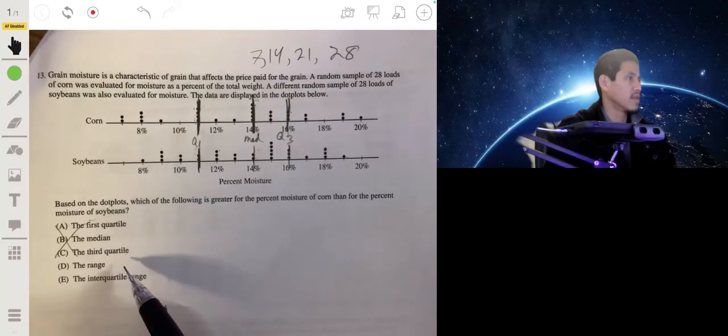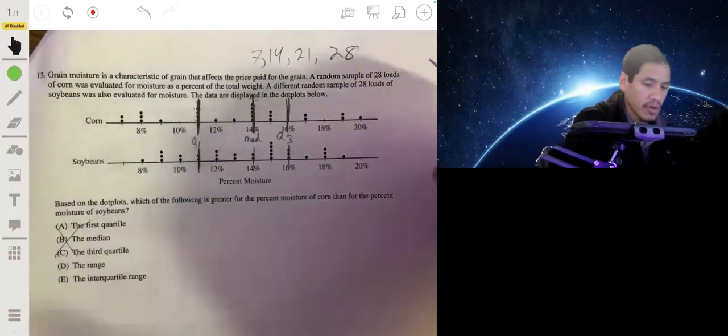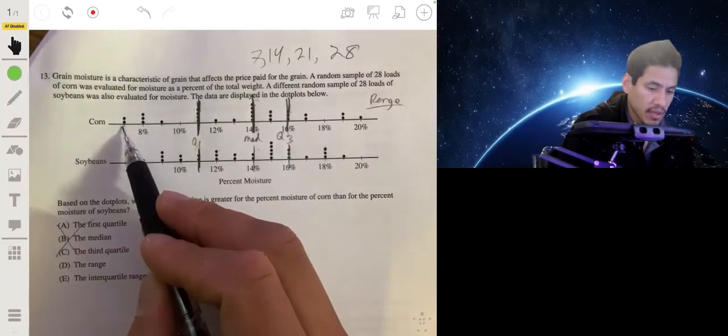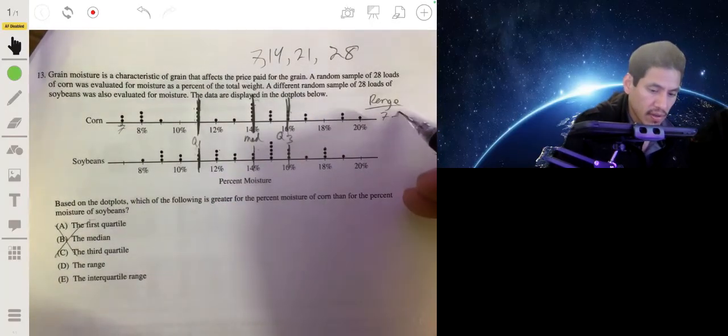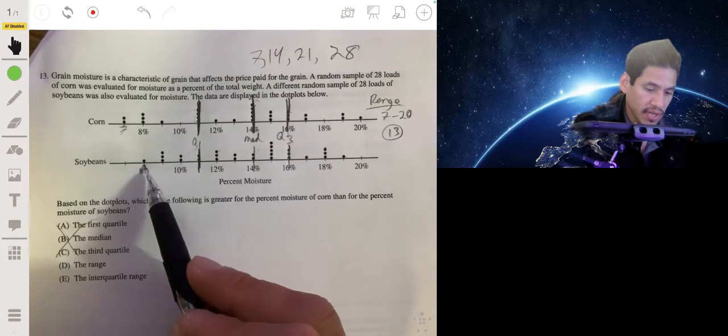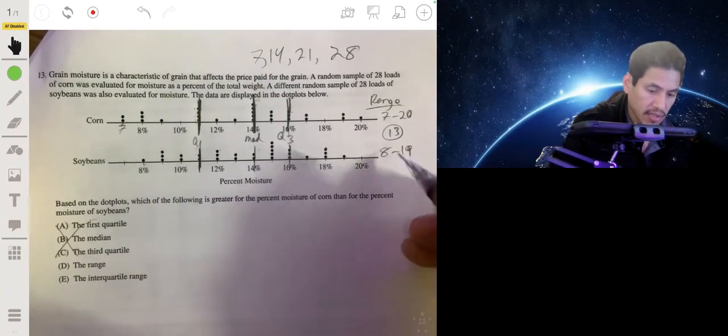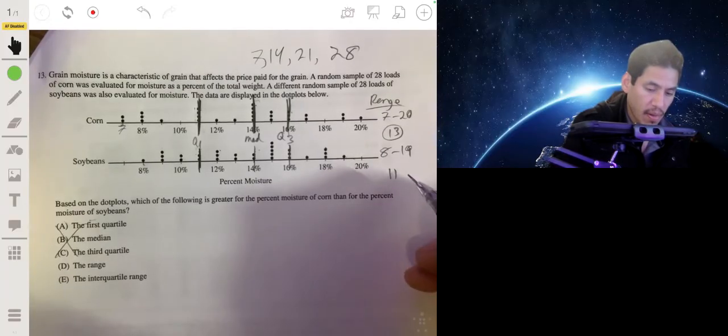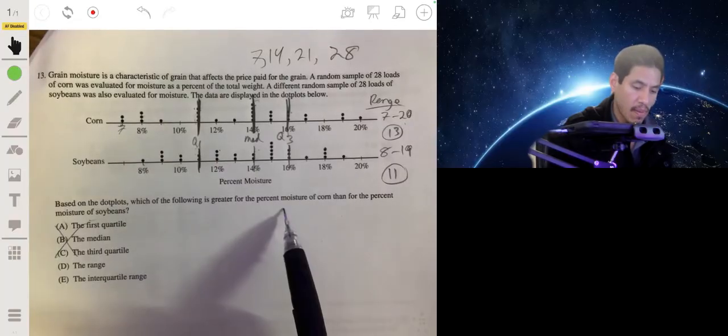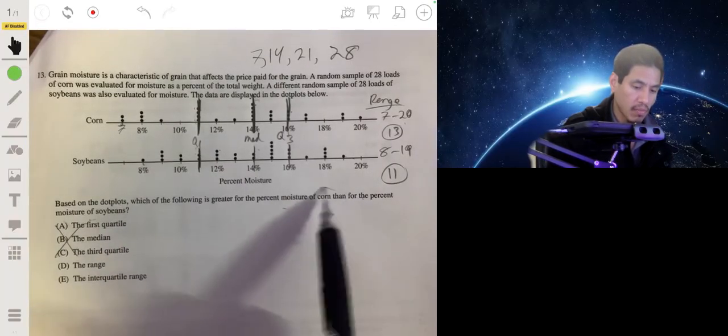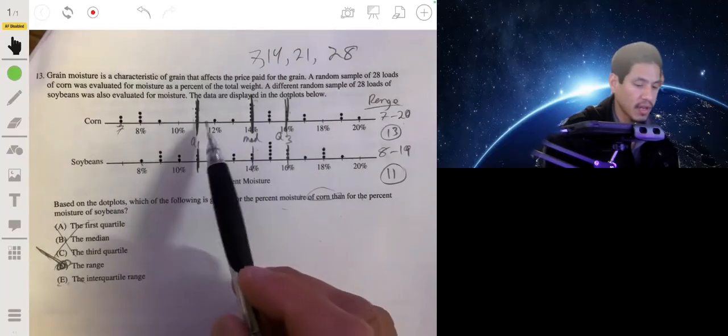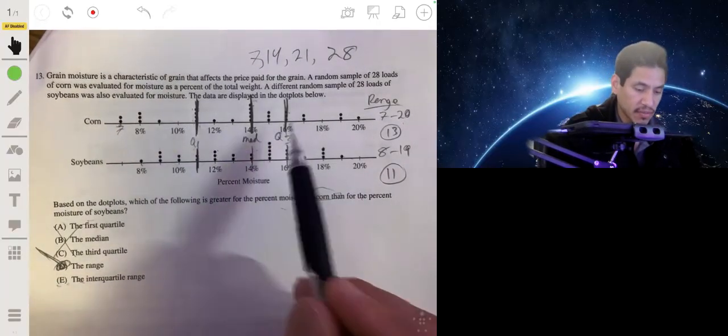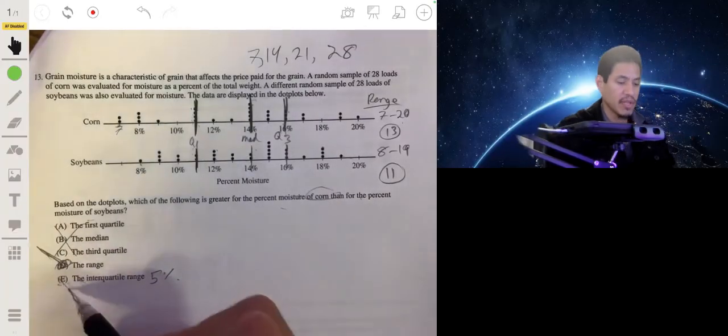The first quartile is 11 for both, the median is 14 for both, the third quartile is 16 for both, so it's not going to be any of these because they're equal. Now let's look at the range. The range for the corn would be from 7 to 20, so the range would be 13. The range for the soybeans would be from 8 to 19, so that would be 11. So the range for the corn is greater. That would be the answer. Their interquartile range would be the same again: Q1 to Q3, that's 11 to 16, so for both it would be five percent. So the answer is definitely range.